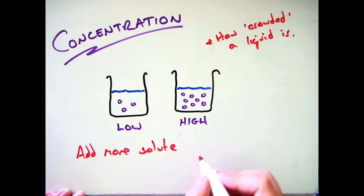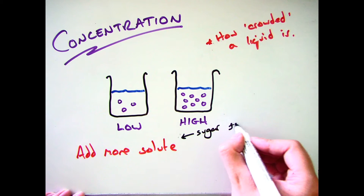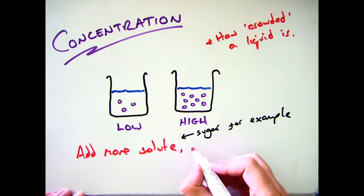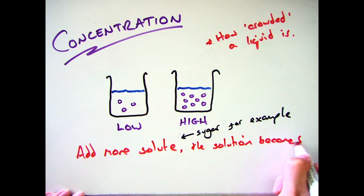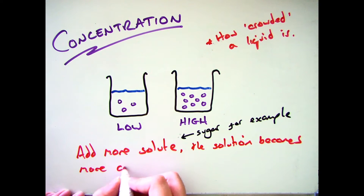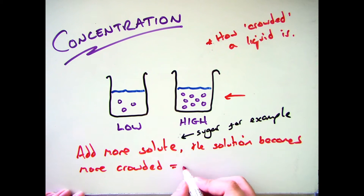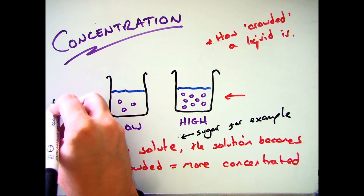A good example of this is if you add more of a solute — for example sugar — into a solution. The more sugar you put in, the more crowded that solution becomes, and therefore the higher the concentration.